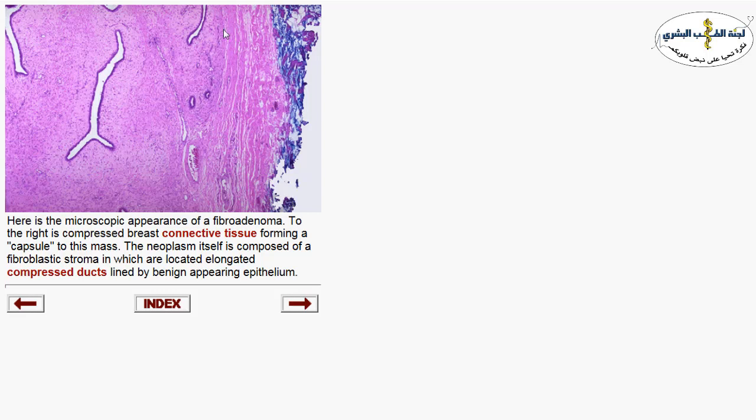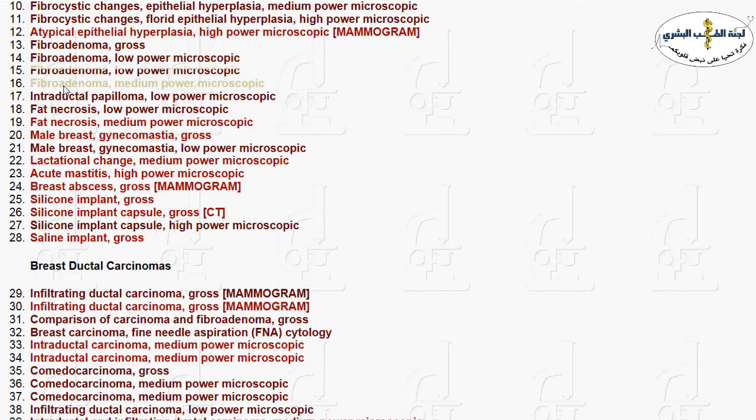Fibroadenoma is another lesion affecting young females in their teens, 20s, and 30s. It is a biphasic tumor with proliferation of both the glandular and stromal component — but benign proliferation — forming a well-defined mass lesion. The glands could be compressed or open within the fibroadenoma. Here you can see the fibrous stroma and glandular proliferation with compressed glands.